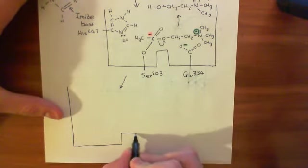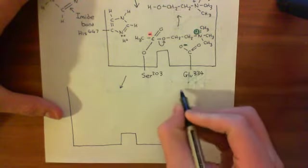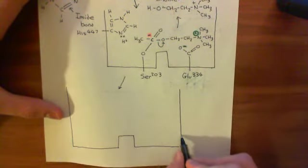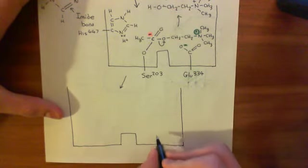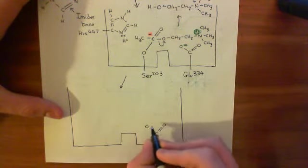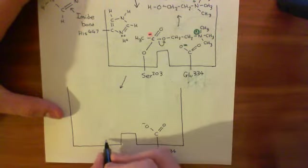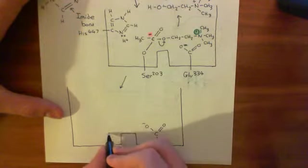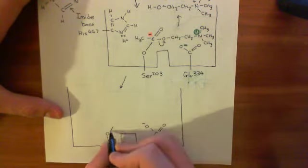Right, so here's the active site again. And here is the anionic site over here, which is no longer needed because the choline has vacated. So here is this glutamate residue at position 334. So here is glutamate 334 again.